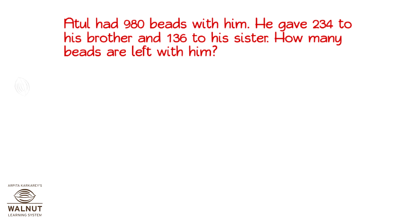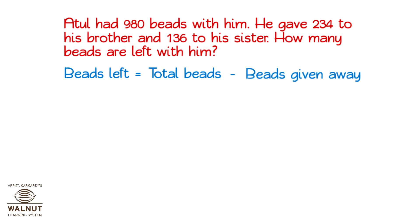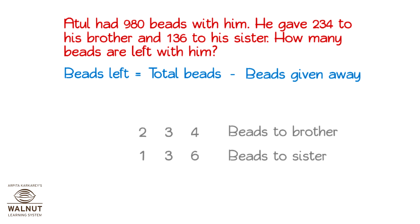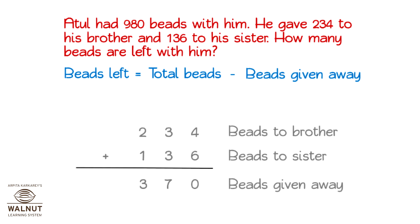Atul had 980 beads with him. He gave 234 to his brother and 136 to his sister. How many beads are left with him? We have to find out the beads left with Atul. We know the total beads, and from that we subtract the beads he gave away. The beads he gave away are the beads given to his brother plus the beads given to his sister. So, we do the addition and get the answer. 370 beads are given away.